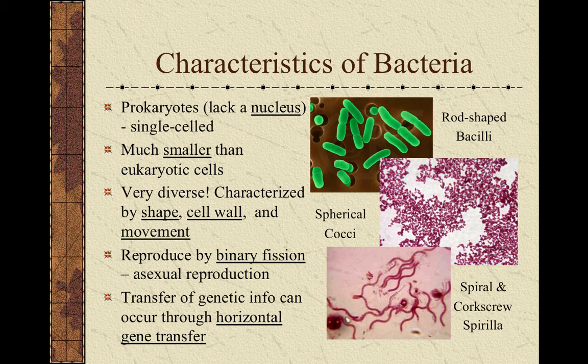In addition, bacteria have the ability to exchange genetic information in the form of small chromosomes called plasmids, in a process called horizontal gene transfer. Bacteria can exchange genetic information with other living bacteria of the same or different species, and even with dead bacteria by picking up bits of DNA in the surroundings as bacteria die and release their contents.